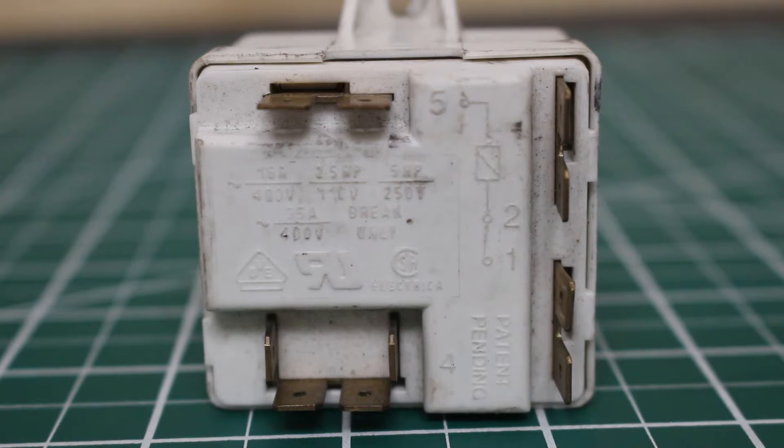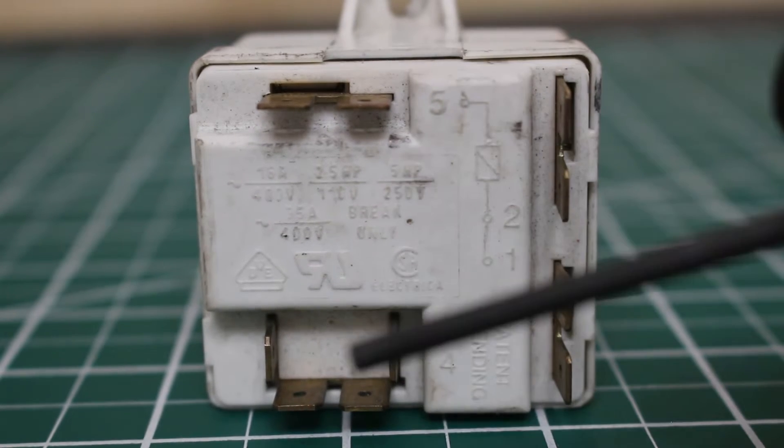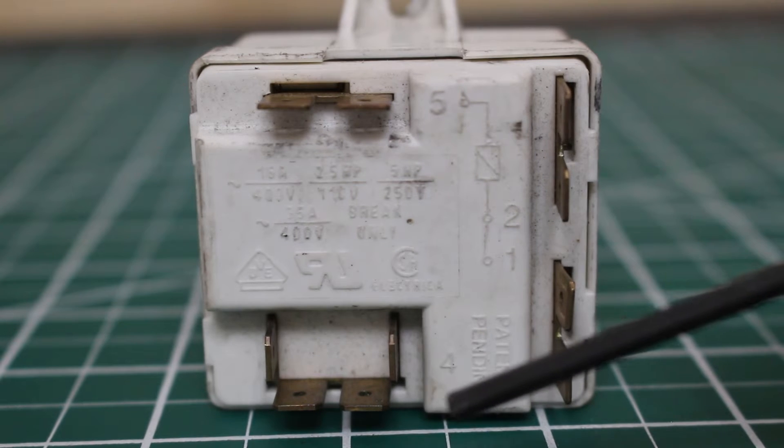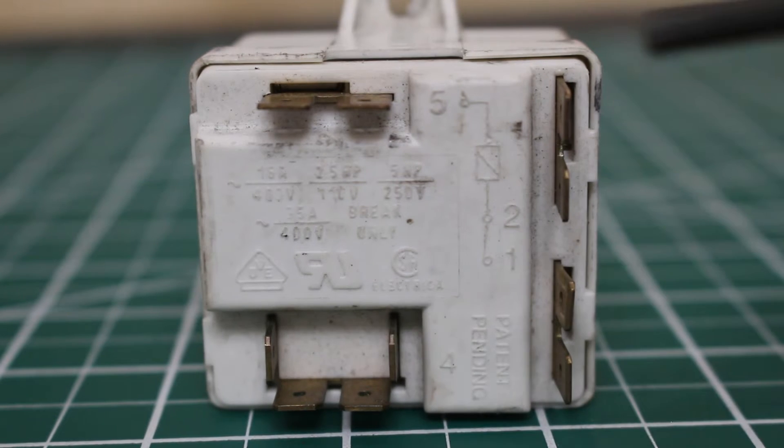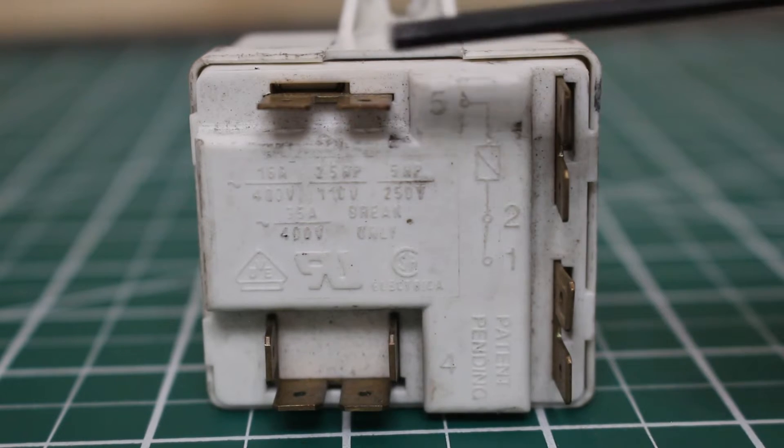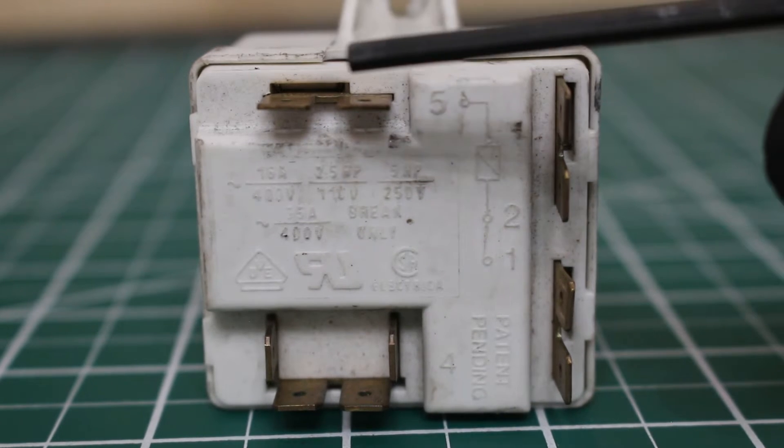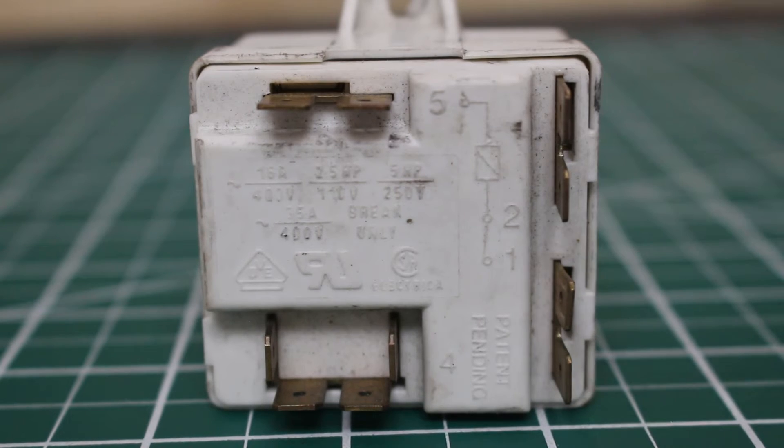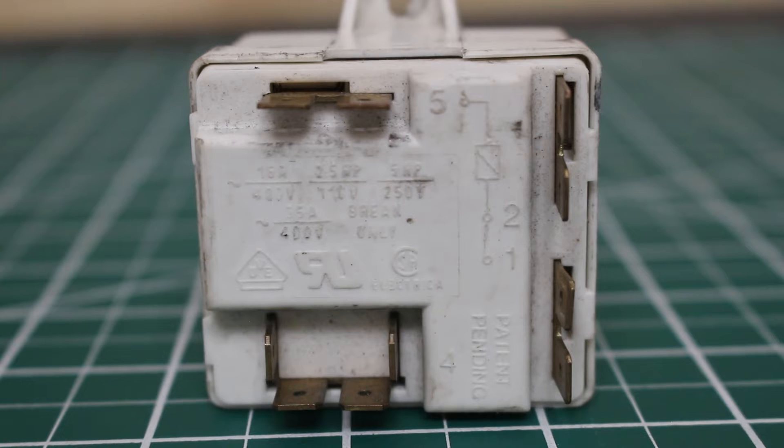One thing that really struck me as strange earlier in my career was this extra terminal. You see we have it labeled as 4. Sometimes you also see a 6. This has nothing to do with the relay, and it's honestly a dummy, a dummy point. So you can just disregard this. The only thing you'll be checking in this relay is points 5, 2, and 1. And this works for every single type of relay that is on the market.